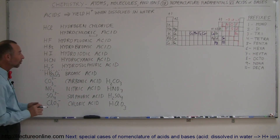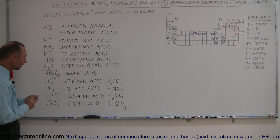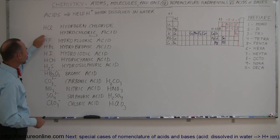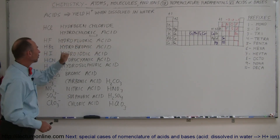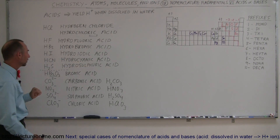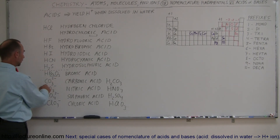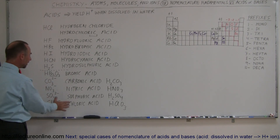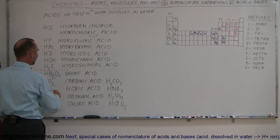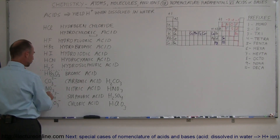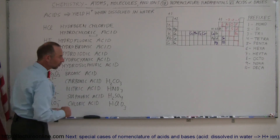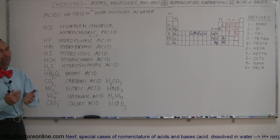Those are the names of some of the more common acids. When a molecule has just two elements, we typically call it 'hydro-' plus the second element with '-ic' behind it, then 'acid': hydrochloric, hydrofluoric, hydrobromic, hydroiodic, hydrocyanic, and hydrosulfuric acid. When dealing with polyatomic ions like bromate, carbonate, nitrate, sulfate, and chlorate, we simply use the ion name with '-ic' behind it and call it an acid: bromic, carbonic, nitric, sulfuric, and chloric acid — after adding the appropriate hydrogens. That is the nomenclature for basic acids.